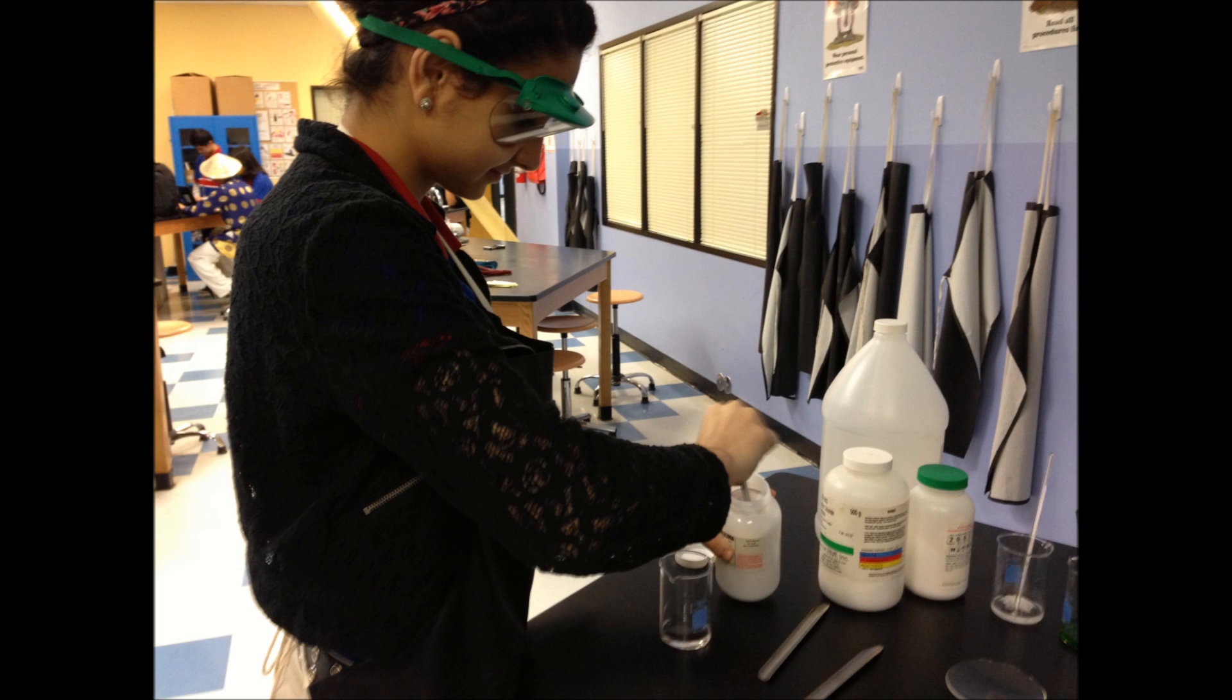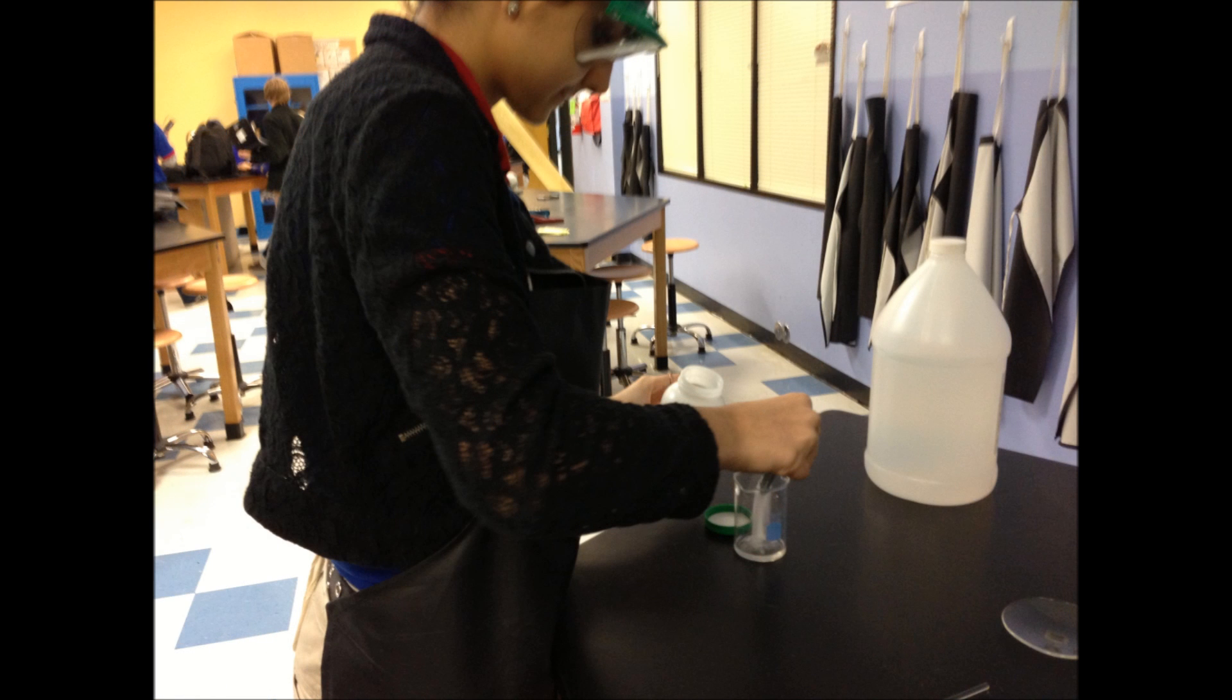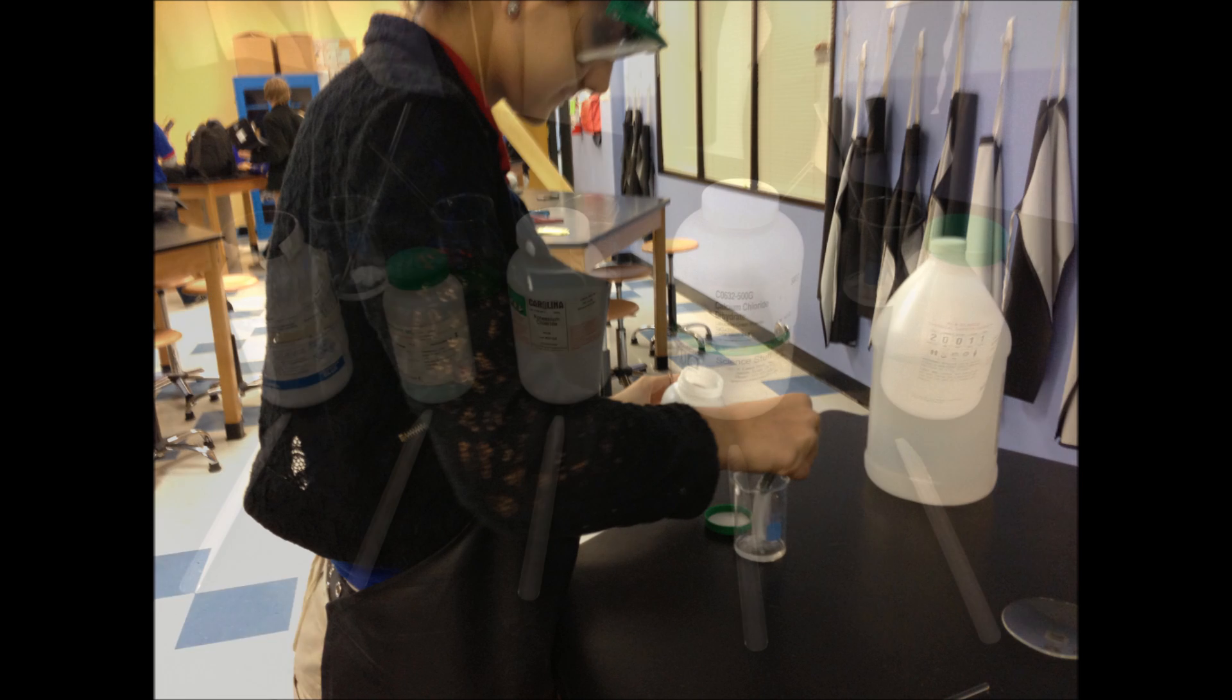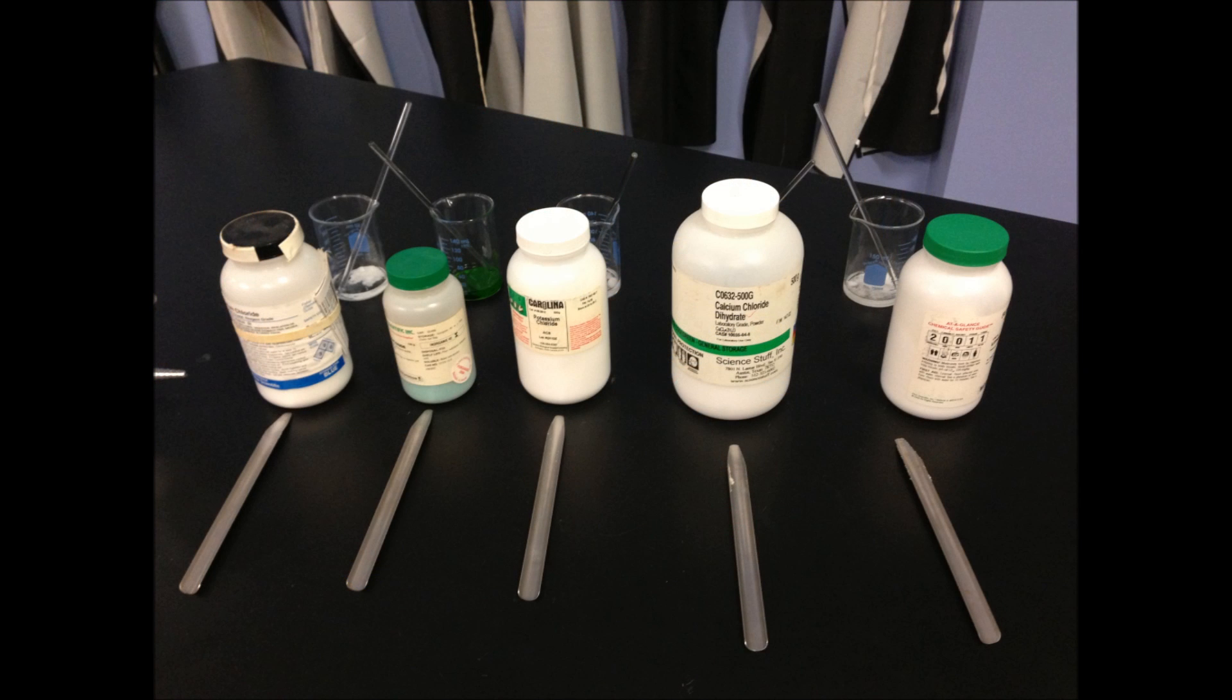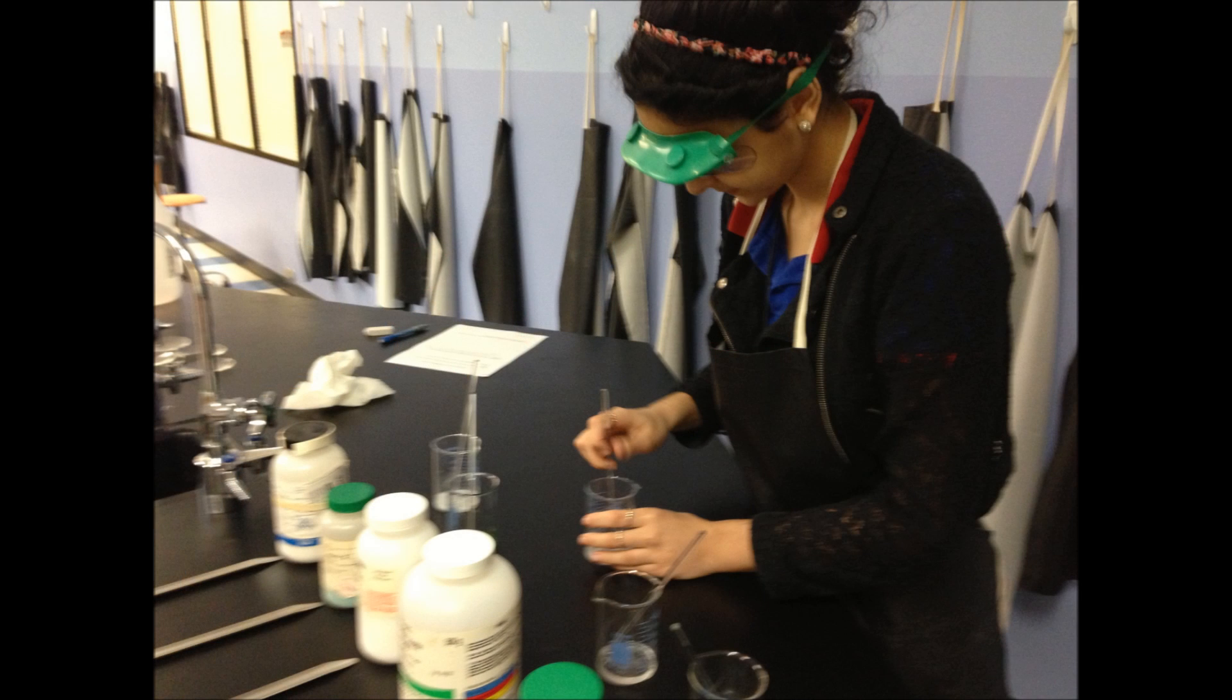To begin, I first added 20ml of methyl alcohol into each of the five beakers. After doing so, I scooped a little of each powder onto each scoop and put it into each of the beakers containing the methyl alcohol. I then mixed the substances together.